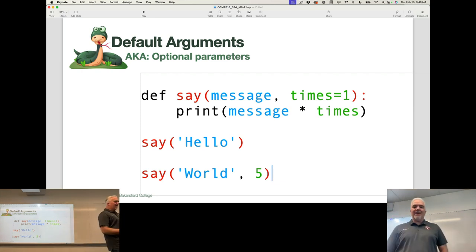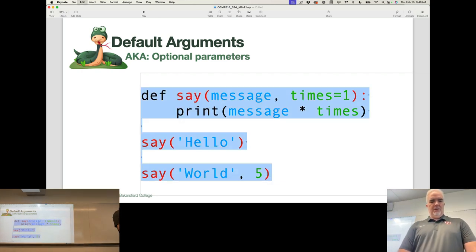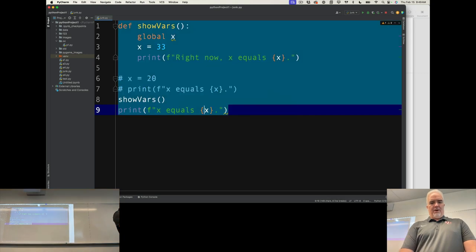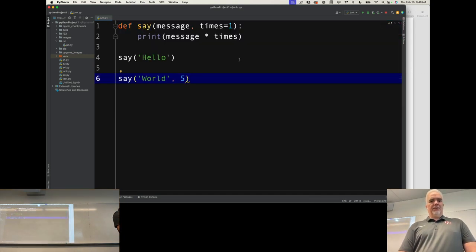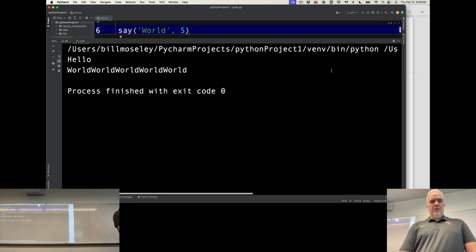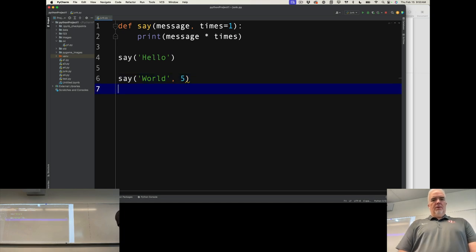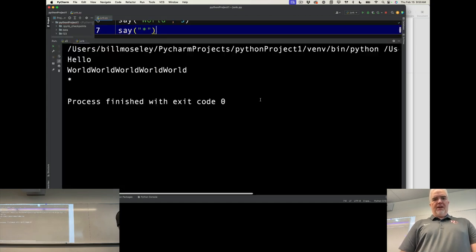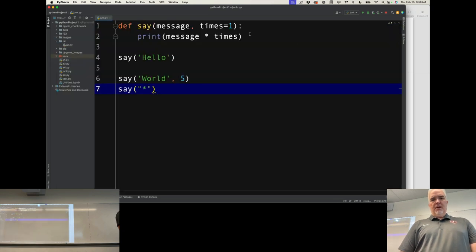So when I give it that parameter, it overrides what's there. So when I run this code, I can send it an asterisk, it says it one time, but because that's the default, I could set the default to five if I want.